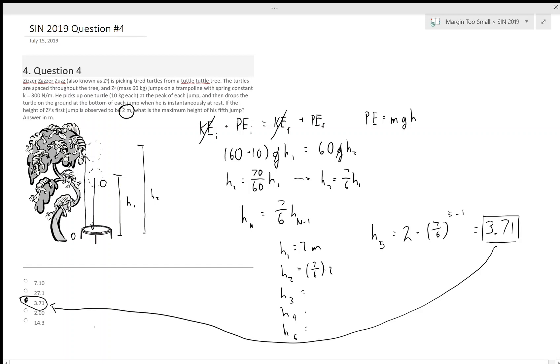So on his fifth jump, Z-Cubed will have a maximum height of 3.71 meters. Hope this helps.